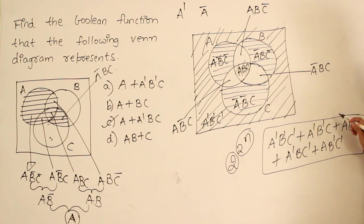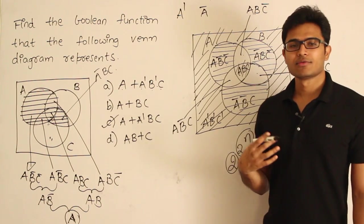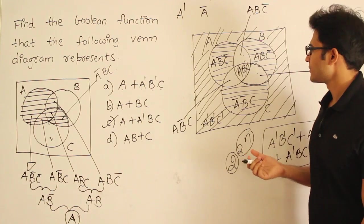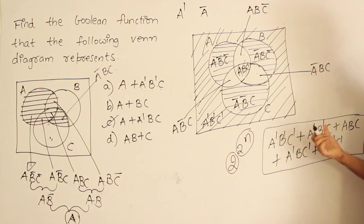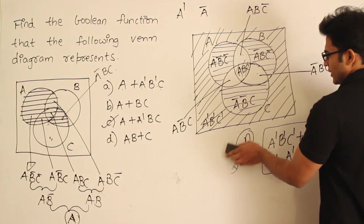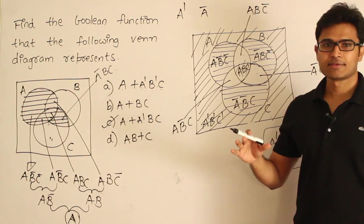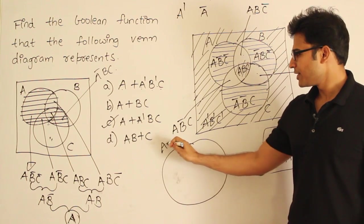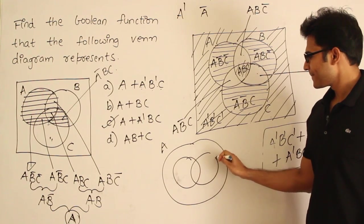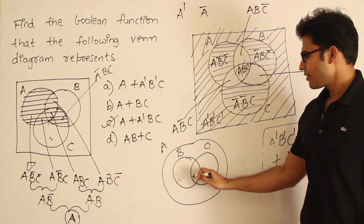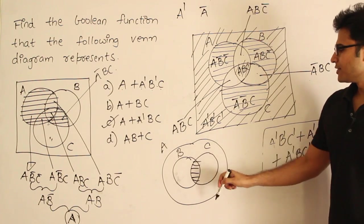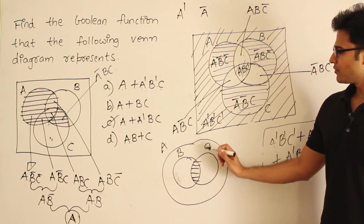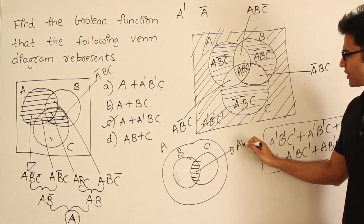So we got five minterms and only three areas are left unshaded. I am not focused on minimizing here. Sometimes instead of a standard diagram, they may give you a meaningless one — for instance, where variable A contains B and C inside it entirely. If they shade the intersection area, what does it mean? A is present, B is present, C is present — an intersection of all three — so the function is A, B, C.